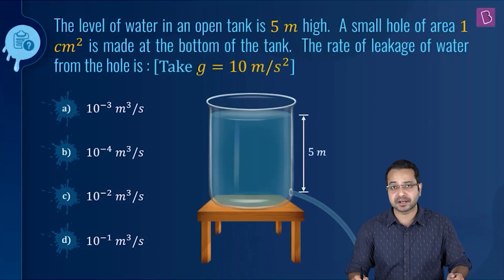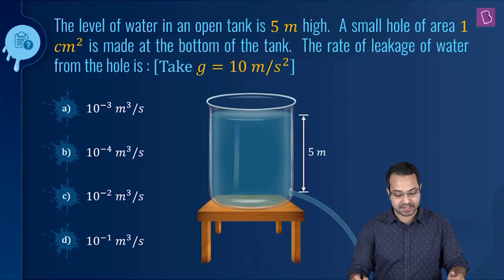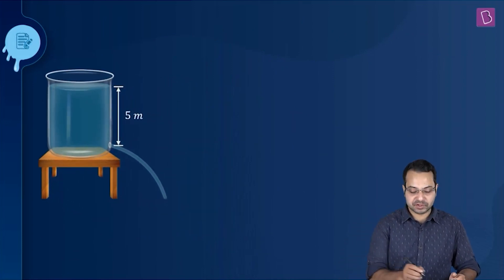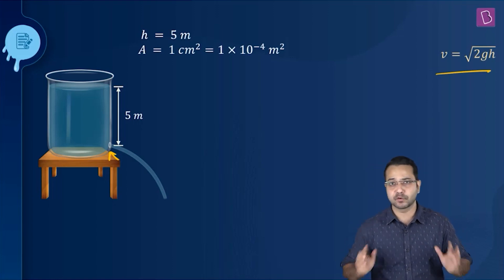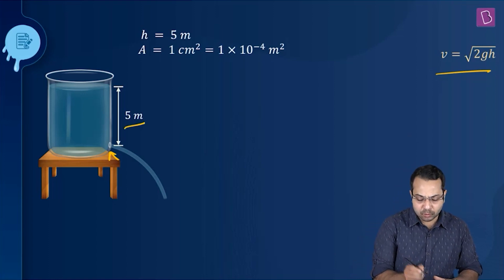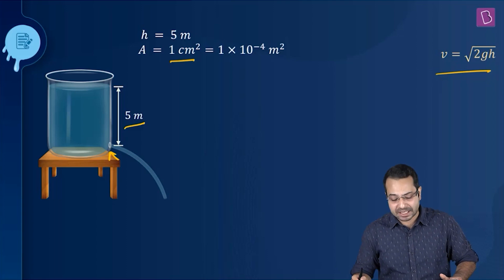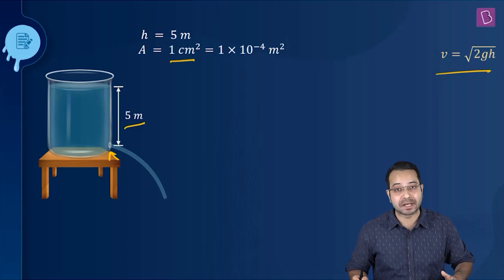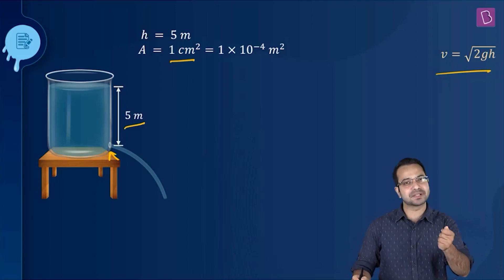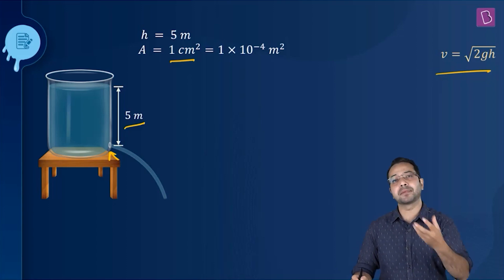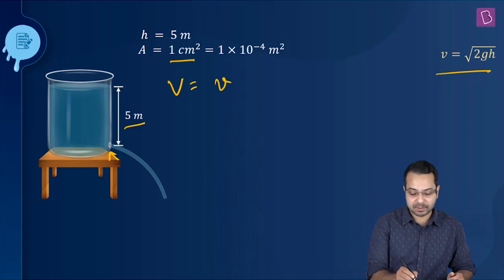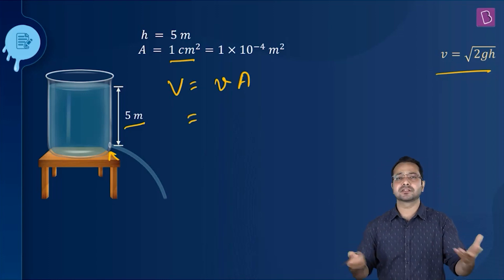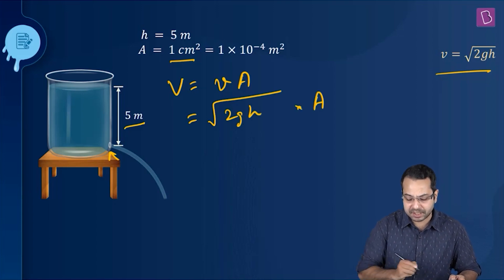The question is: the level of water in an open tank is 5 meters high. A small hole of area 1 centimeter square is made at the bottom of the tank. What is the rate of leakage of water from the hole? Since it's a small hole in an open tank, the speed of efflux is given by v = √(2gh). The hole is at a depth of 5 meters and the area of the hole is 1 cm². What we have to find is the volumetric flow rate — the volume per unit time of liquid coming out of the hole, which equals velocity multiplied by the area of cross section.